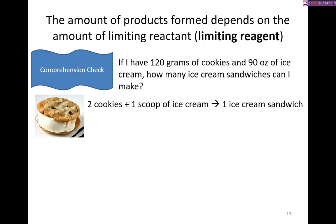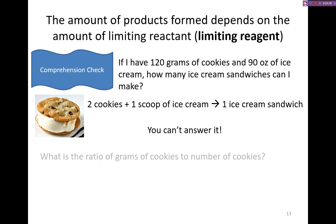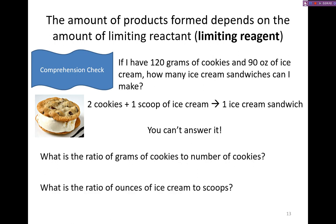Let's try a problem. If you have 120 grams of cookies and 90 ounces of ice cream, how many ice cream sandwiches can you make? You're told that it takes two cookies and a scoop of ice cream to make one ice cream sandwich. It turns out that you cannot answer this question, because you don't know what the ratio of grams to the number of cookies is, and you don't know what the ratio of ounces of ice cream is to scoops. You're missing that information.